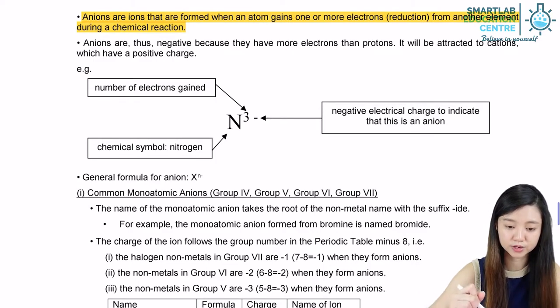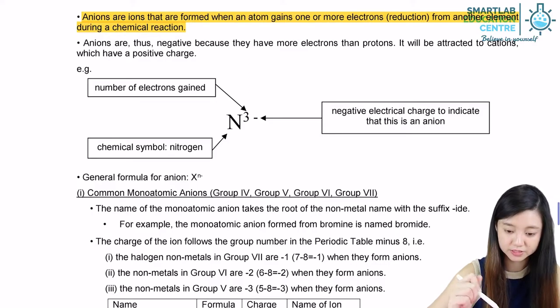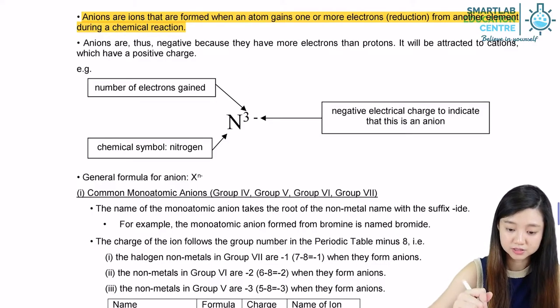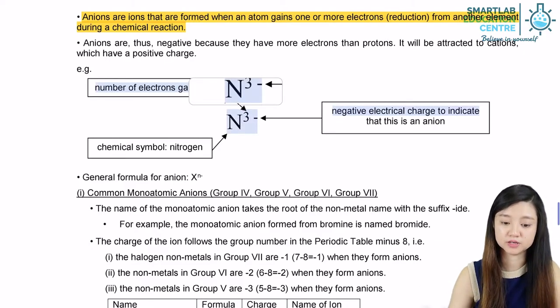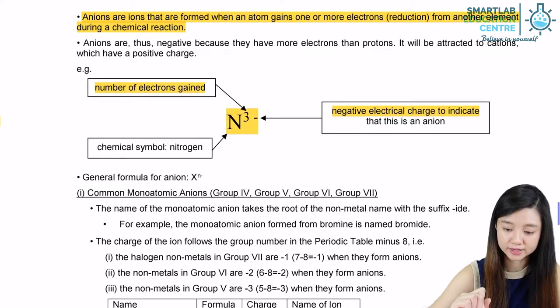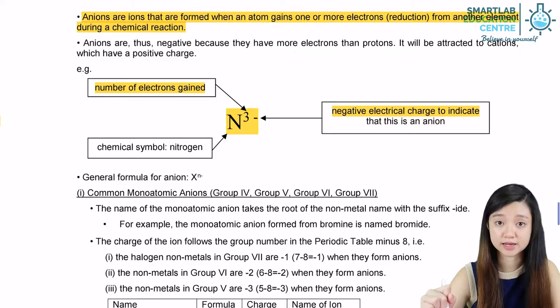When we write out the anion symbol, the symbol is the same as on the periodic table. The number indicates how many electrons are being gained, and the negative sign shows that it is an anion.